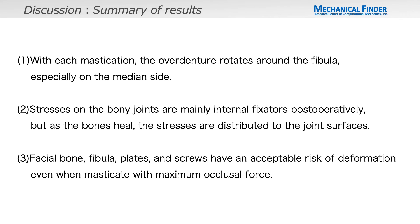This analysis provided the following findings. First, with each mastication, the overdenture rotates around the fibula, especially on the median side. Second, stresses on the bony joints are mainly on internal fixators postoperatively, but as the bones heal, the stresses are distributed to the joint surfaces. Third, facial bone, fibula, plates, and screws have an acceptable risk of deformation even when masticated with maximum occlusal force.